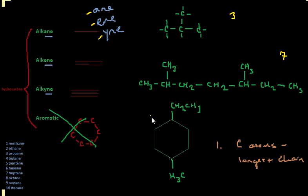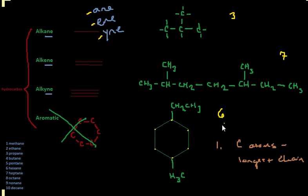And then for the third structure, there will be carbon atoms on each point, so we would have one, two, three, four, five, six — that would be our longest chain there. So let's do the first two examples and we'll get on to the last one, because it's obviously a little different structure.